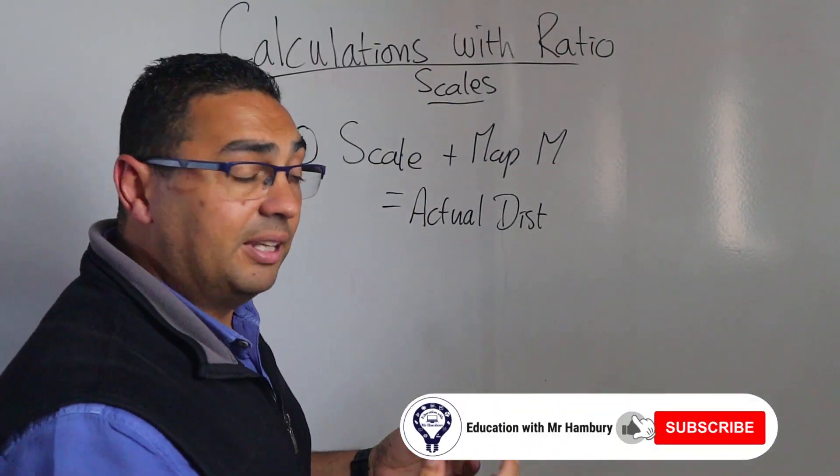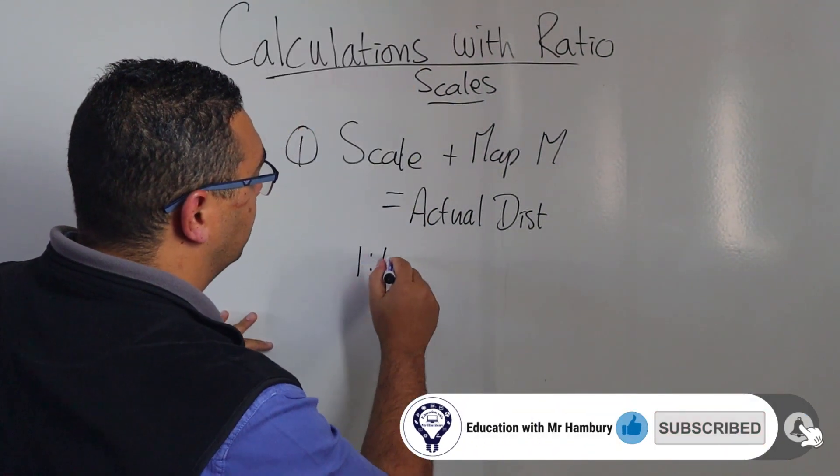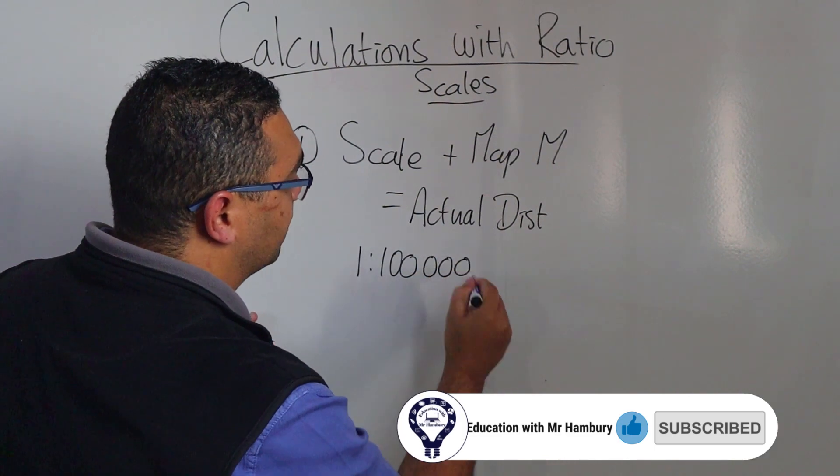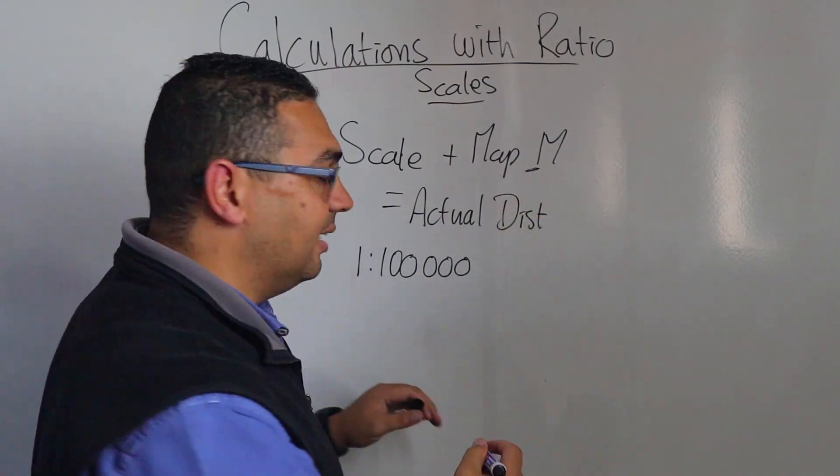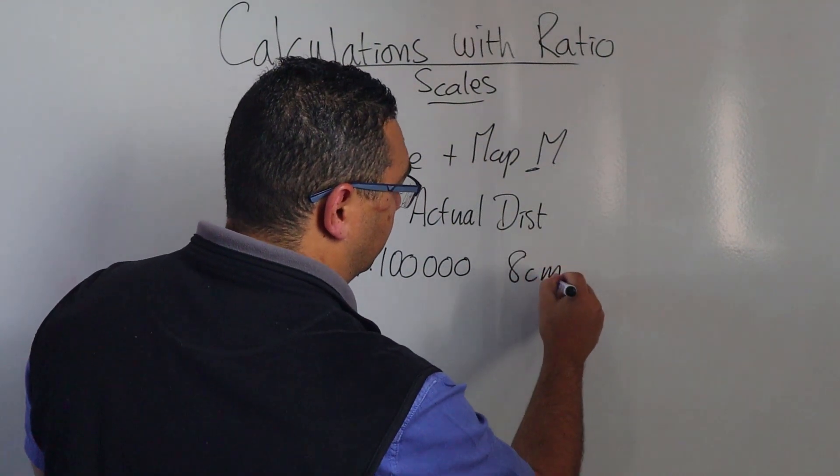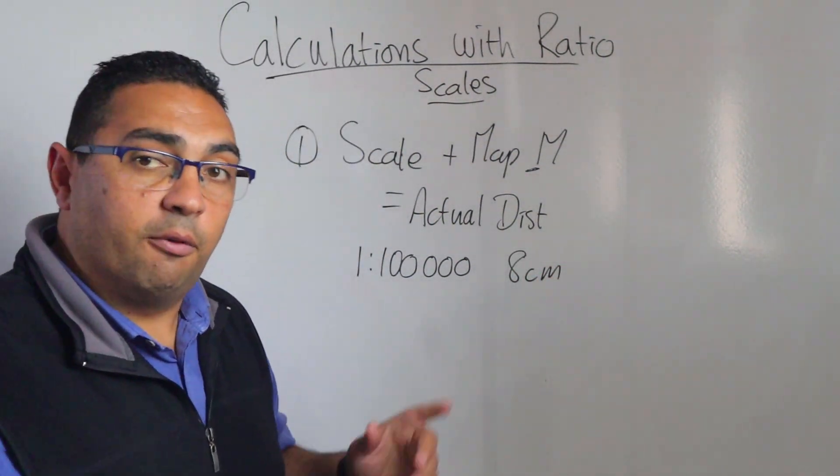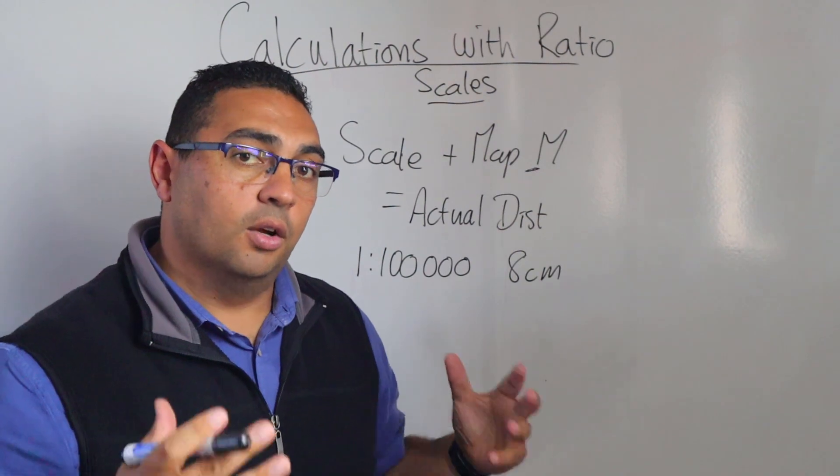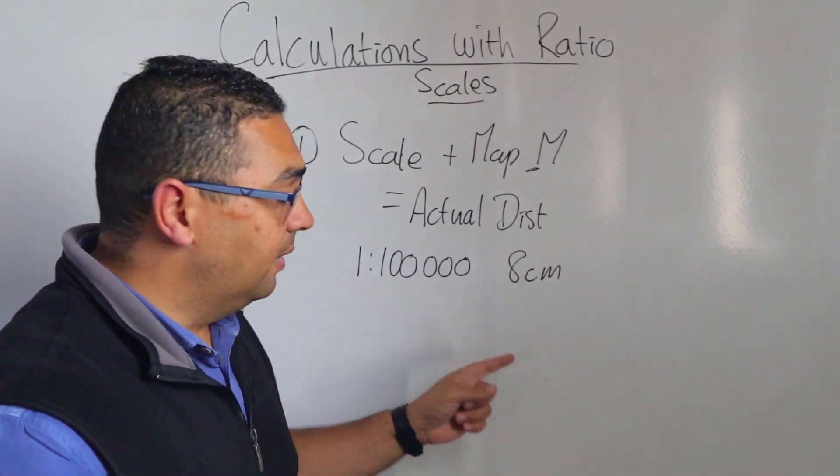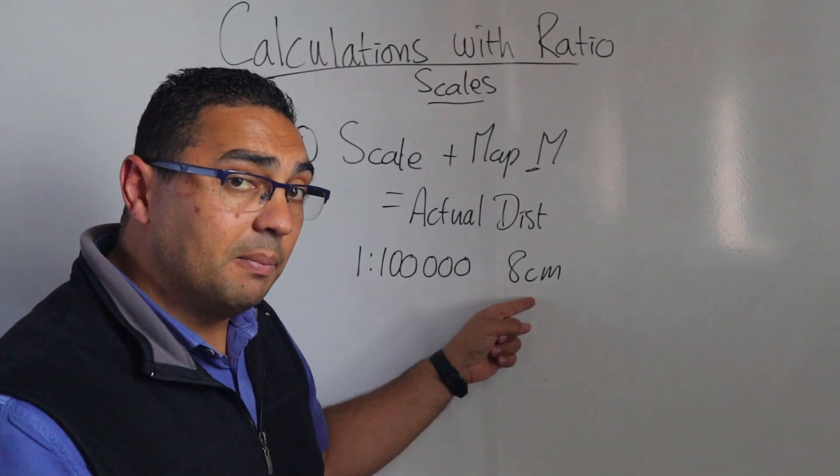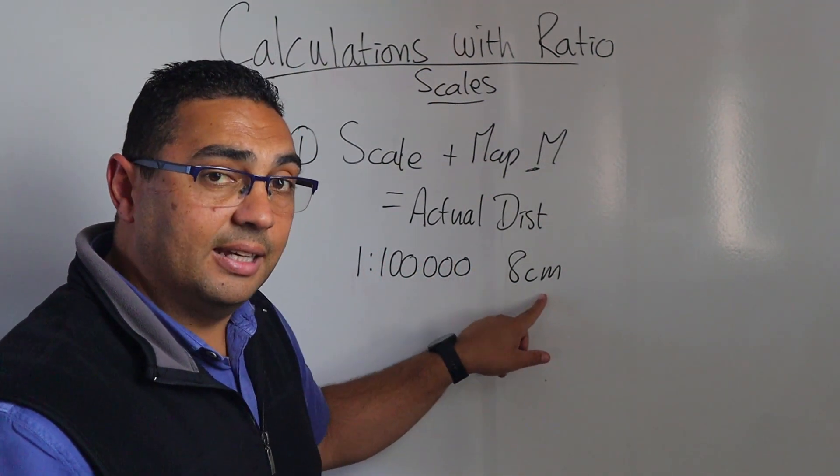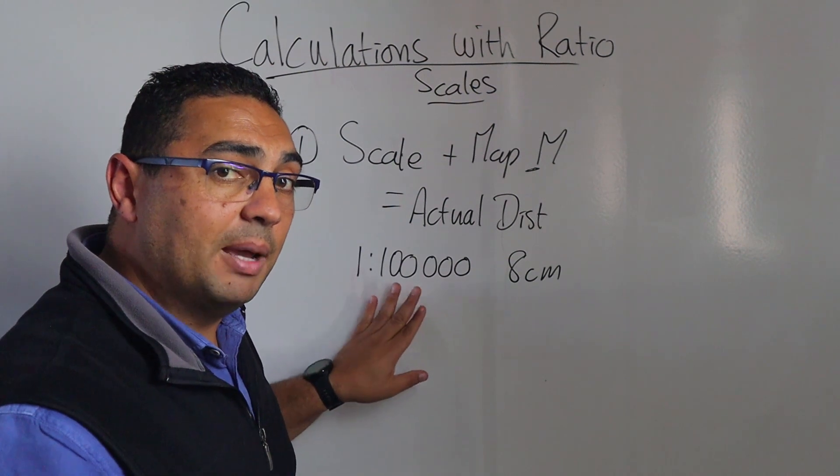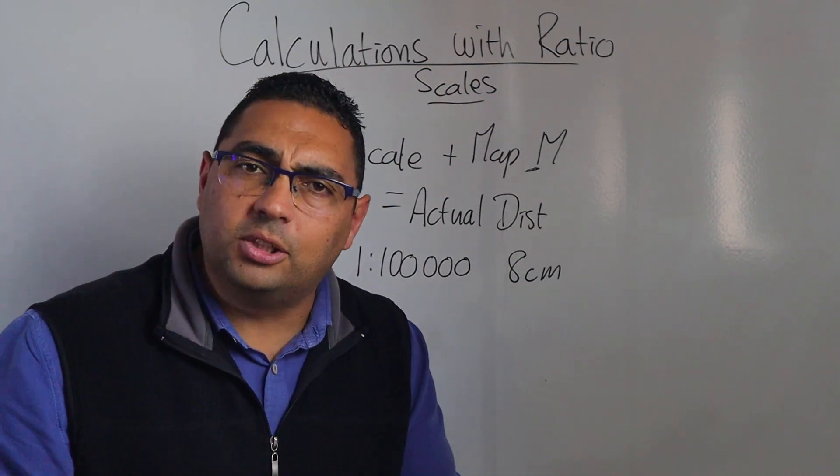Let's say the scale that they've given me is 1 to 100,000 and the map measurement they've given me is 8 centimeters. Now from this they want me to calculate what the actual distance is going to be. Remember this person has measured on the map and on their ruler what they've measured is 8 centimeters. The scale of the map is 1 to 100,000, so what do we do?